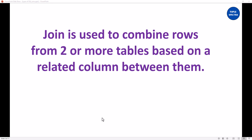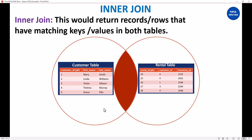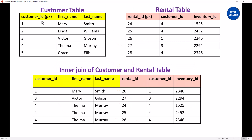And that was when we also talked about inner join. In an inner join, records or rows that have matching keys or values in both tables are returned. I gave you an example using the customer table and the rental table, and what I showed you was that we could join using the customer ID column in both tables. I told you that the customer ID column in the customer table is the primary key, and the customer ID in the rental table is the foreign key.